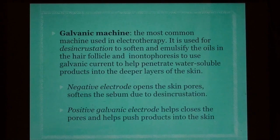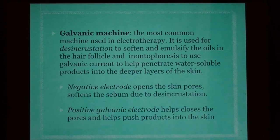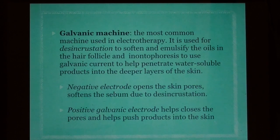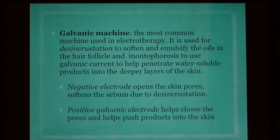Galvanic machine: the most common machine used in electrotherapy. It is used for disincrustation — to soften and emulsify oils in the hair follicle — and iontophoresis, which uses galvanic current to help penetrate water-soluble products into the deeper layers of the skin. The negative electrode opens the pores and softens sebum; the positive galvanic electrode helps close the pores and push products into the skin.